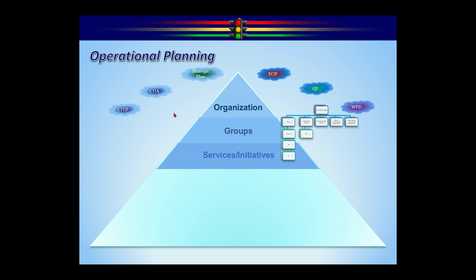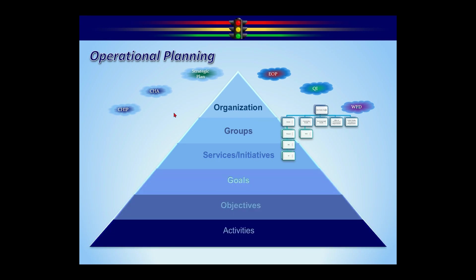Each group has a set of services or initiatives. Services are ongoing things; initiatives are future programs you're trying to implement. Each service and initiative has a set of goals — the high-level definition. Each goal has a set of objectives, which use the SMART framework: specific, measurable, attainable, realistic, and time-based — a finite target. Activities are the steps we go through to reach the objective.